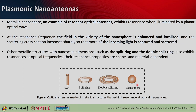At the resonance frequency, the field in the vicinity of the nanosphere gets enhanced and localized — very strong just around the nanoparticle. This gives rise to a scattering cross section much larger than the geometrical cross section of the nanoparticle, which is how it can work as an antenna. Other metallic nanostructures with nanoscale dimensions, such as splitring or double-splitring structures, can also be designed to have resonance at optical frequencies, with resonant properties that are shape and material dependent.